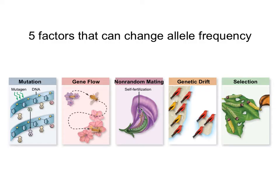Non-random mating: either if some individuals with certain alleles never get to mate, they're never selected as mates, then their alleles will disappear in the population. Or you can also have non-random mating in which certain alleles will mate only with the same type — so that only alleles with a tall gene mate with individuals with a tall allele, and individuals with a short allele only mate with individuals with a short allele. You will then have fewer heterozygotes.